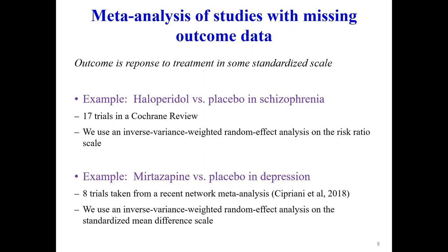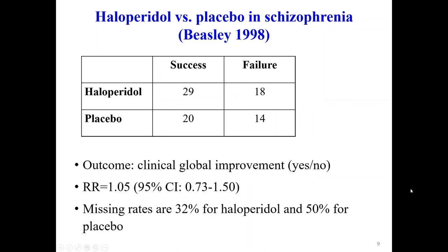We will use two examples: one for a dichotomous outcome — haloperidol versus placebo in schizophrenia with 17 trials — and one for a continuous outcome — mirtazapine versus placebo in depression with 8 trials. For illustration, I take one study from the haloperidol example: 29 successes and 18 failures for haloperidol, 20 successes and 14 failures for placebo. The risk ratio is 1.05, very close to one.